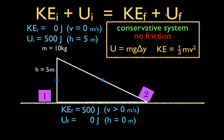Let's consider when each object is halfway down. This object has lost half of its height, which means it's lost half of its potential energy. That half went into kinetic energy. So when the objects are halfway down, they have the same potential and kinetic energy — both are 250 joules. Similarly, a quarter of the way down they'd have lost 125 joules of potential energy, which becomes kinetic energy. At any point along the path in a conservative system, kinetic energy plus potential energy must equal 500 joules.